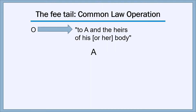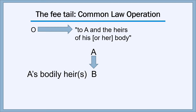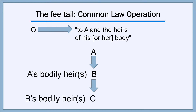Let's look at the way the common law fee tail would actually operate. If O deeds to A and the heirs of his body, A is the first taker and would hold the property during A's lifetime. When A died, the property would pass to A's bodily heir — let's call him B — and B would hold the property during B's lifetime. When B died, it would pass to B's bodily heir, C. You can think of the fee tail as a chain of bodily heirs, one after another, each party holding a life estate, stretching on forever. If the chain of bodily heirs ever ran out, the property would revert back to the original grantor, or if that person was dead, to his or her heirs.